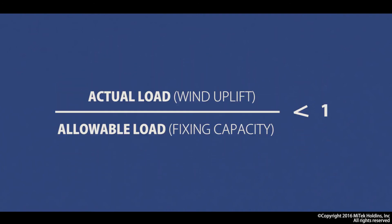During each of these connection designs, we do our calculation again. We divide our actual load — which is the wind uplift — by the allowable load, which is the fixing capacity of any connections we're putting in there. And as long as we're below one, our fixing connections are fine.